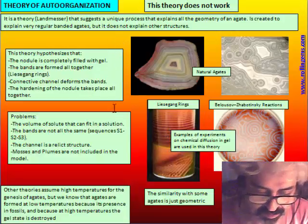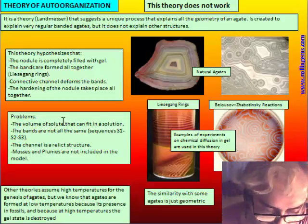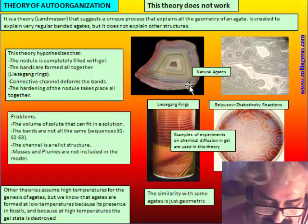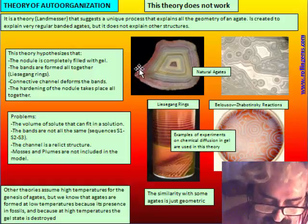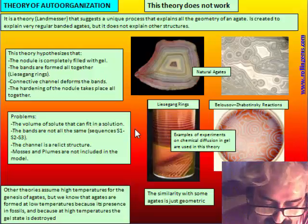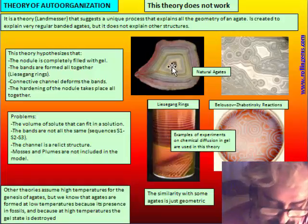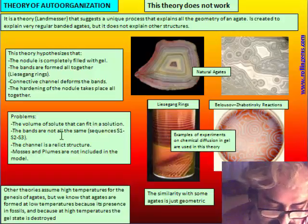This theory is not working because of many problems. Firstly, the volume of silica that can fit in a solution is limited, so we cannot have in a single cavity filled by water enough silica to make all in the state of gel. The solubility of silica in water cannot pass around 20%, so there is 80% of the cavity that cannot be filled by solid. Also, we know that the bands are not all the same — there is a sequence of S1, S2, S3. S2 and S3 are solid — fibrous chalcedony and quartz. This kind of band cannot be deformed.